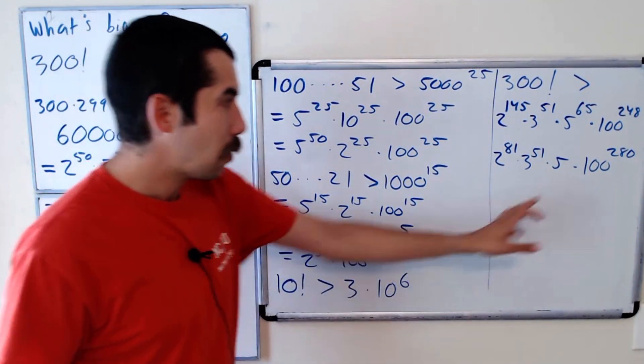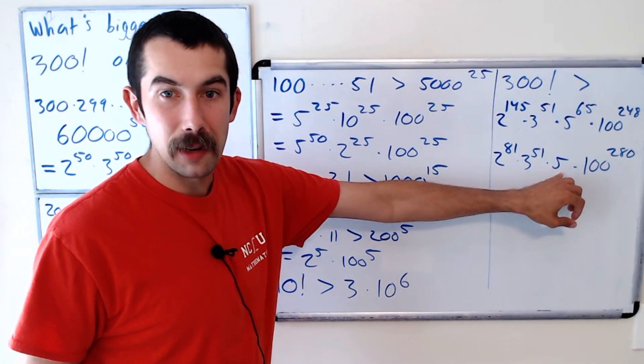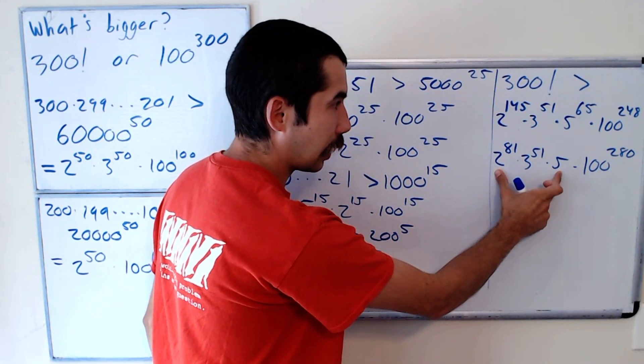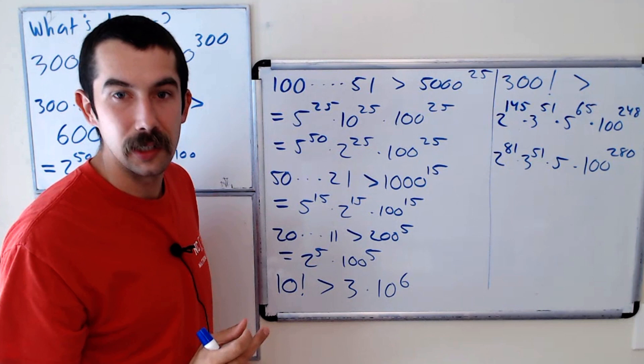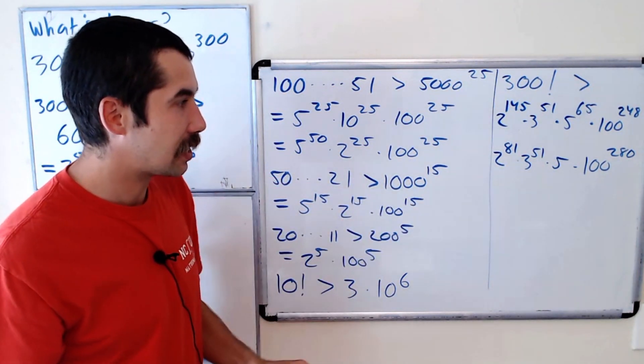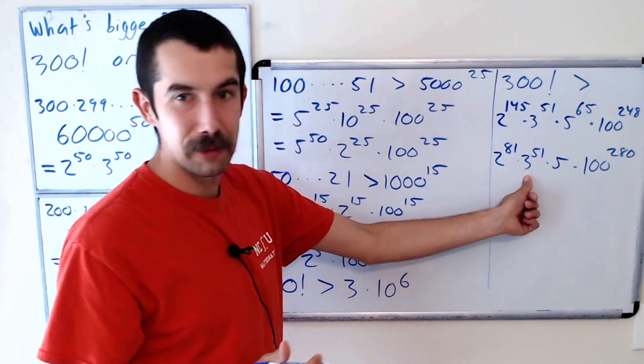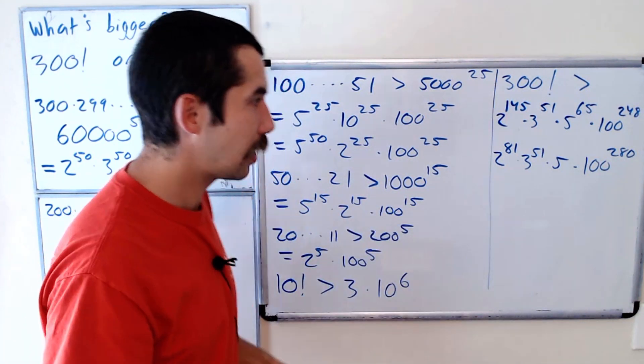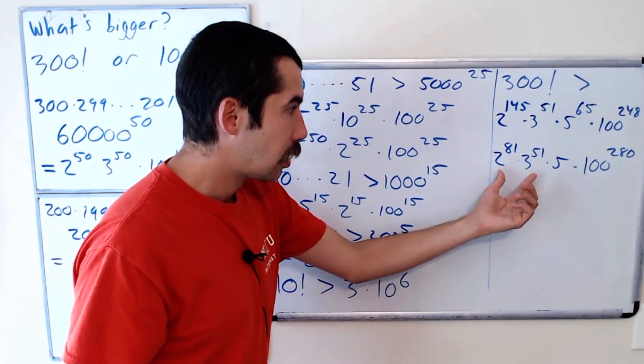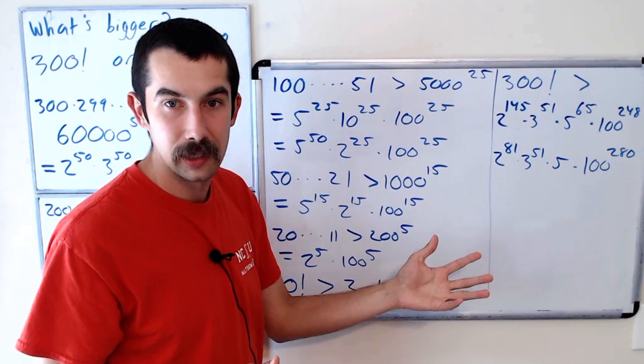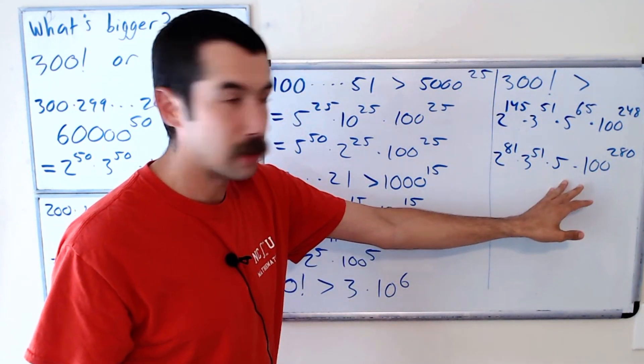Right? And now, ideally, we want to show that this term is greater than 100 to the 20th power. And so one thing to note is that 2 times 3 is greater than 5. Okay, so we could take out, let's take out 39 factors of 2 and 3. And that's going to give us some fives.